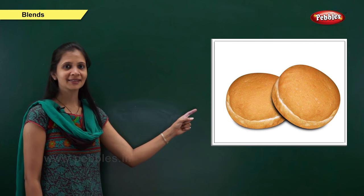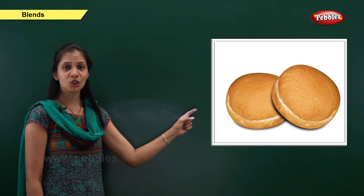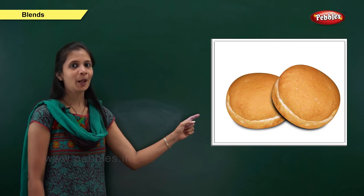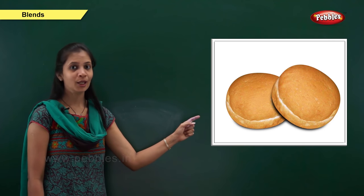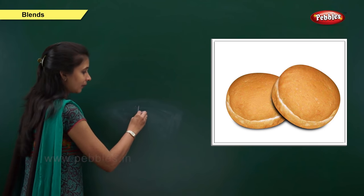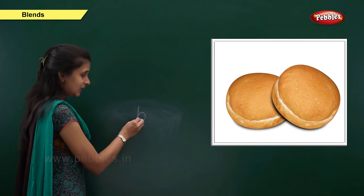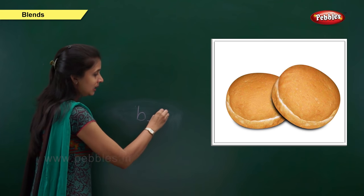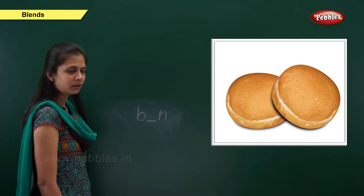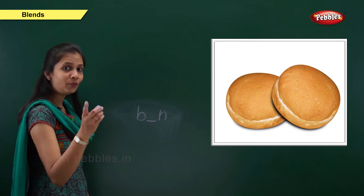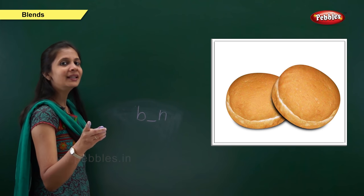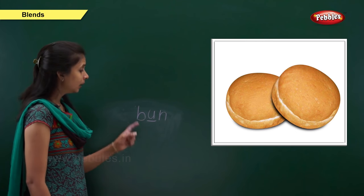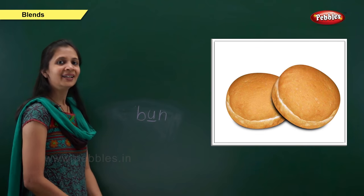Next one. Which picture is this? Yes, it is a picture of ban. What is the sound of it? It is ba, a, na — ban. When the sound is 'ba', the letter is b. When the sound is 'na', the letter is n. When the sound is 'a', the vowel is u. So: b, u, n — ban.